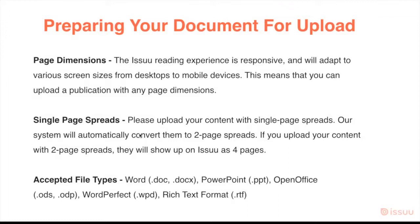On preparing your document for upload — page dimensions: the Issue reading experience is responsive and will adapt to various screen sizes from desktops to mobile devices. This means you can upload a publication with any page dimension. Single page spreads are what we need for uploads. Please upload your content with single page spreads; our system will automatically convert them to two page spreads. If you upload content with two page spreads, that will show up on Issue as four pages. Accepted file types include Word documents, PowerPoint, WordPerfect, rich text format, and PDF.